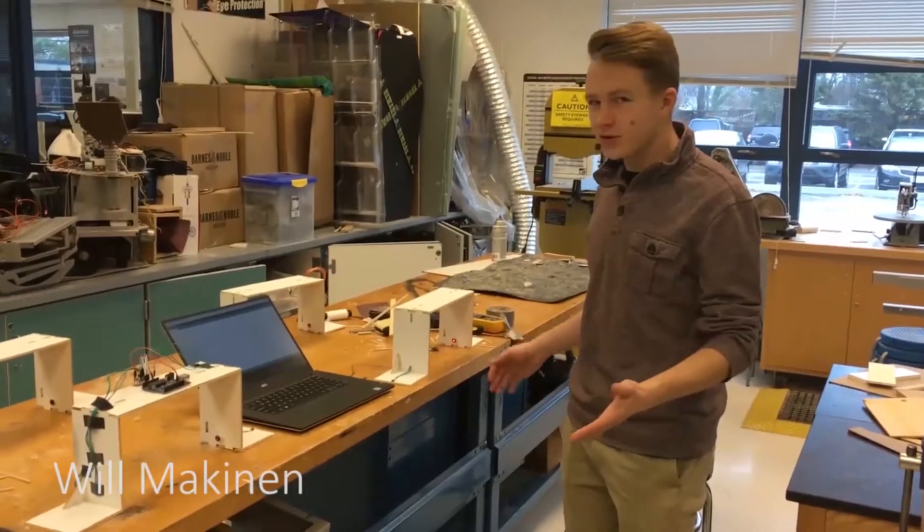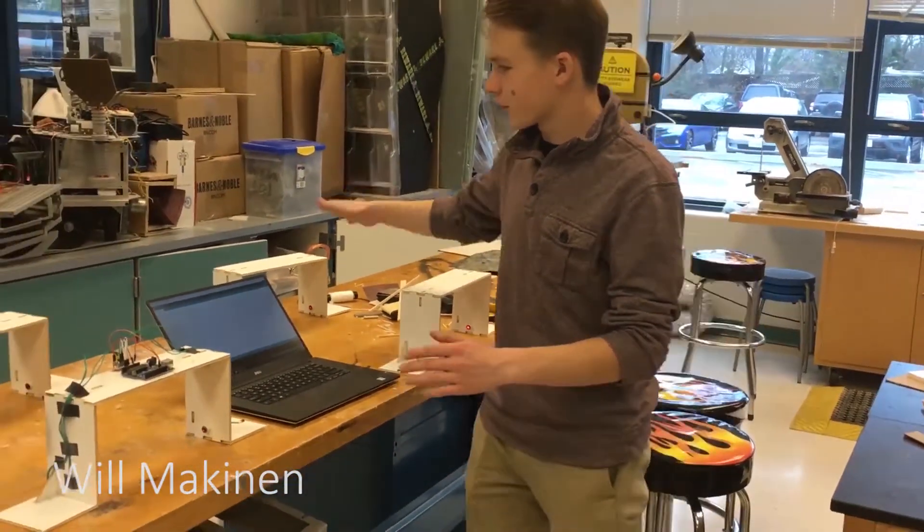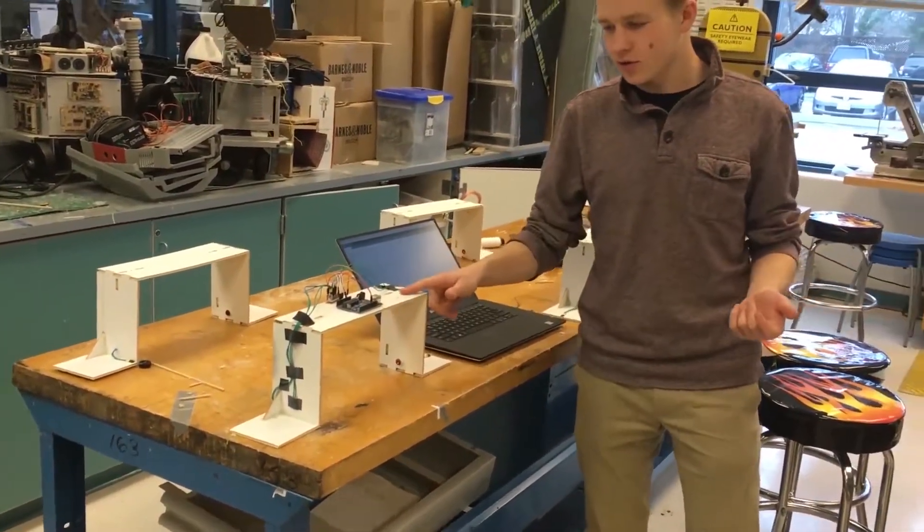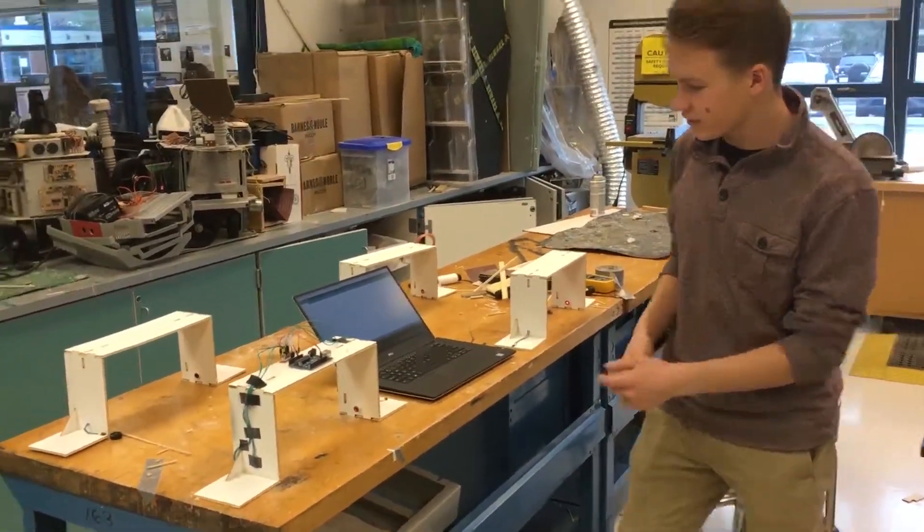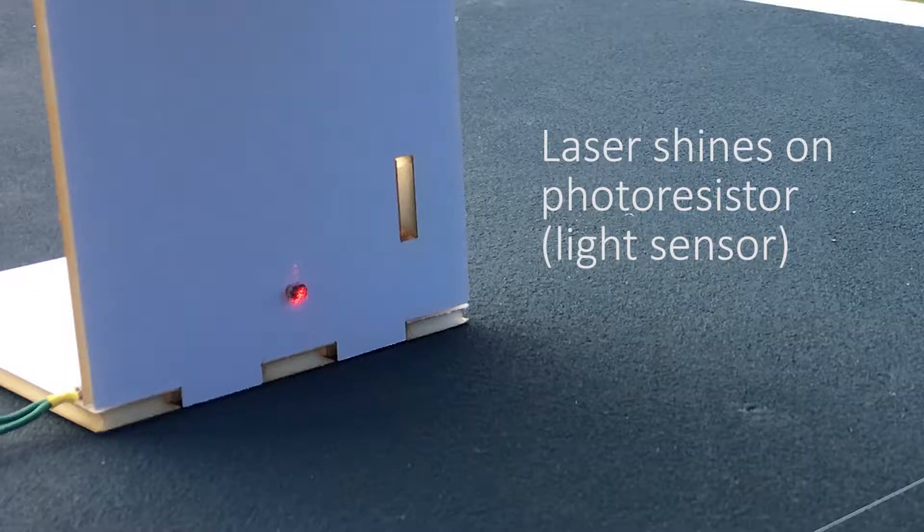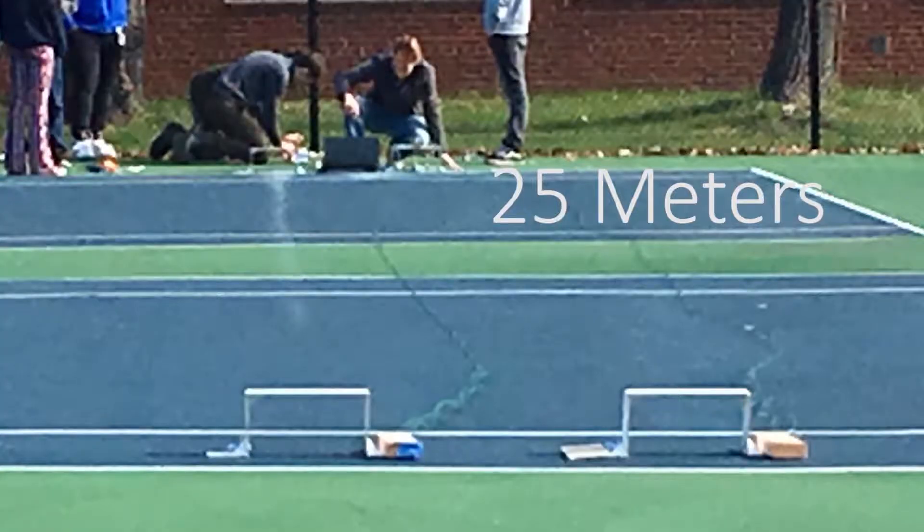So this is the timing system we used for the project. So essentially we created these four frames here, which were just made with a laser cutter and some poster board. And what happens is there are laser pointers shining across each of the frames, and two cars are raced at once. They start here and end here, but these are actually 25 meters or so apart.